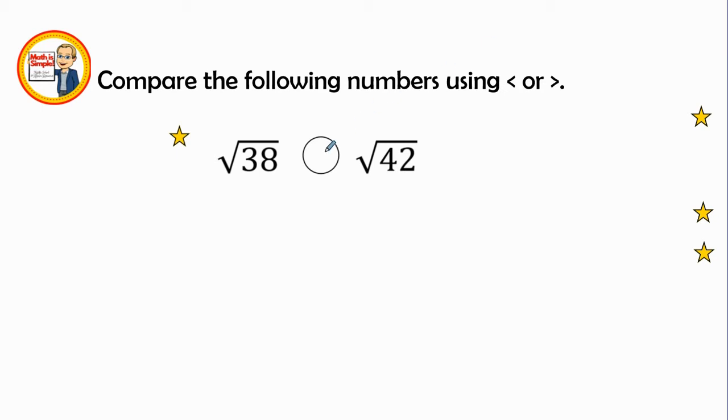And so it is going to be the radical 38 is definitely less than radical 42 because it goes in numerical order. And obviously 38 is less than 42. So radical 38 has to be less than radical 42.